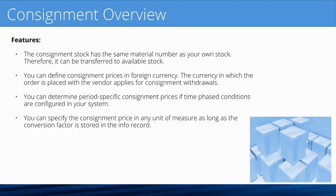Getting into some of the features of SAP consignment: the consignment stock has the same material number as your own stock, so it can be transferred to available stock — you don't need one part number for consignment and another for owned stock. You can also define consignment prices in foreign currency. For example, if your supplier wants to be paid in pesos and your local plant uses US dollars, you can create an info record and a consignment PO in pesos and pay your supplier accordingly.